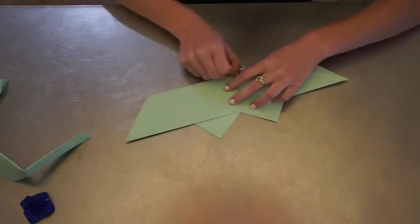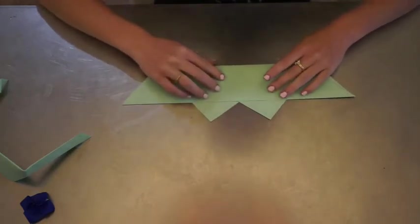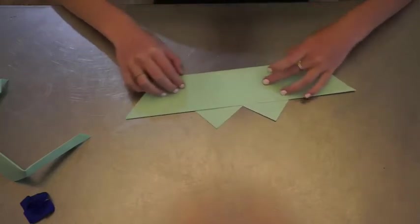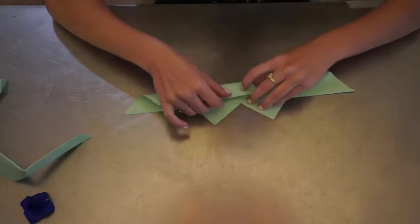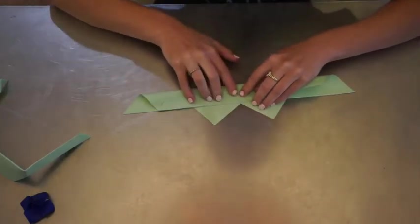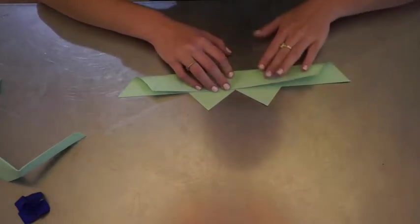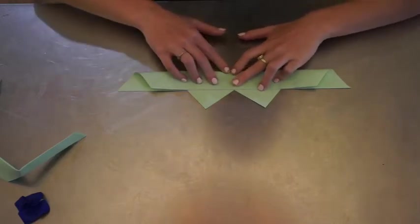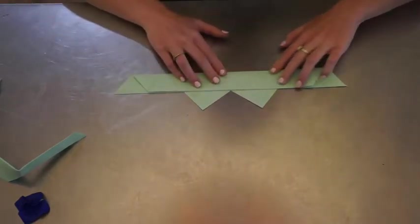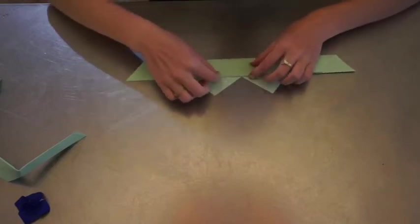Then you're going to take this edge that you just created here and fold up one more time, just like this. When you're folding this up, you want to make sure that your paper doesn't slip and go further than you want it to, so that you still have a nice straight line there.